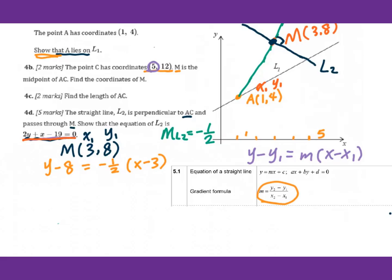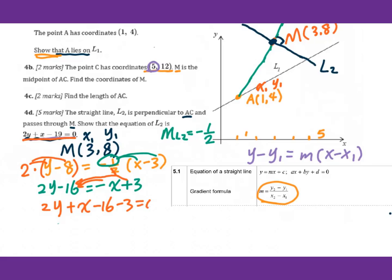Then we change into this form. First, get rid of the fraction by multiplying by 2 on both sides. Then do the distributive property. You will get 2y - 16 = -x + 3. Then move everything to the left side. When you cross the equal sign, change sign. So we have 2y + x - 16 - 3 = 0. Organize: 2y + x - 19 = 0.